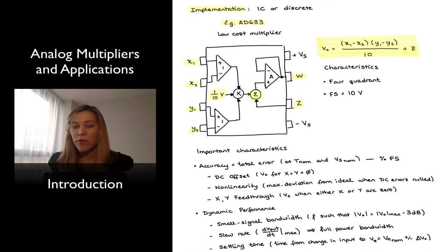This is a 4-quadrant multiplier with a 10-volt full-scale voltage. That means the differential input voltage can be plus-minus 10 volts, so can the common mode voltage, as well as the output voltage can be between plus-minus 10 volts.